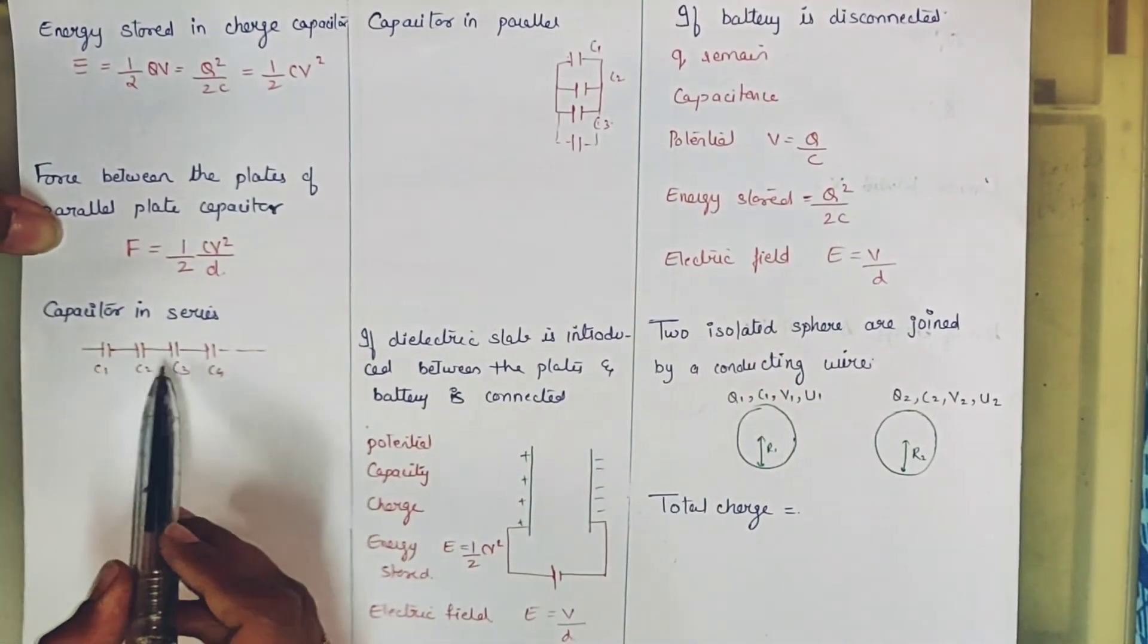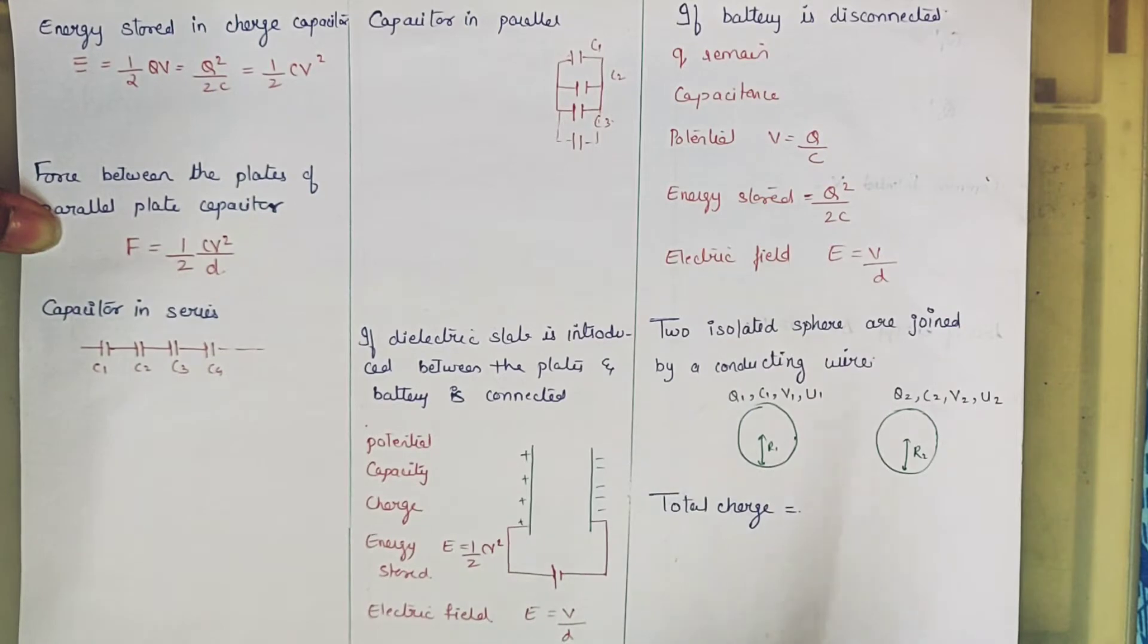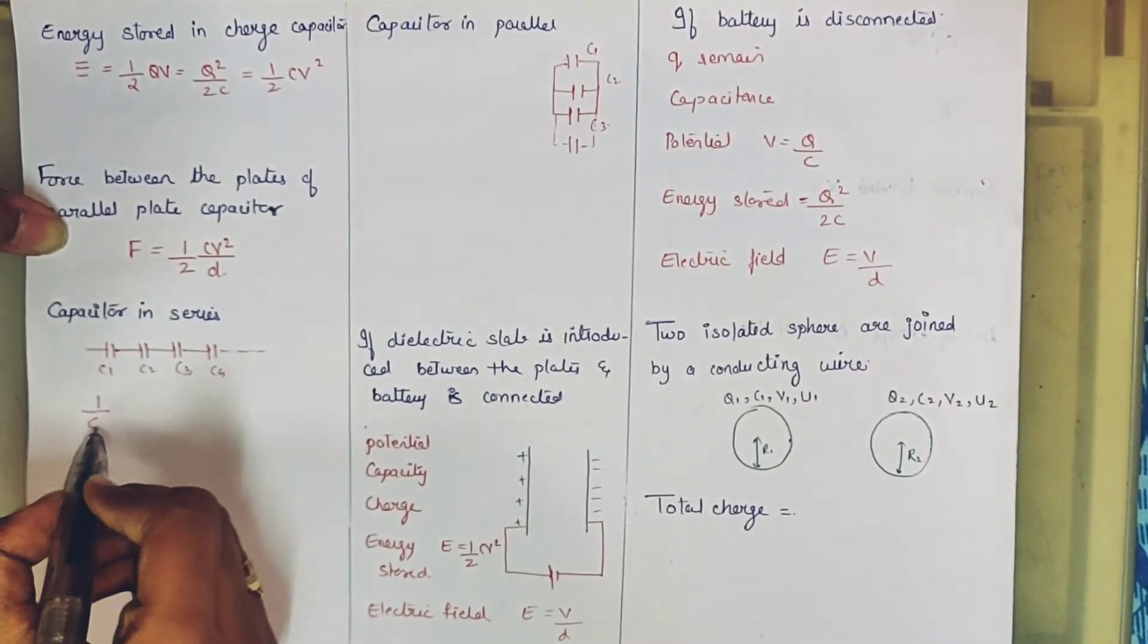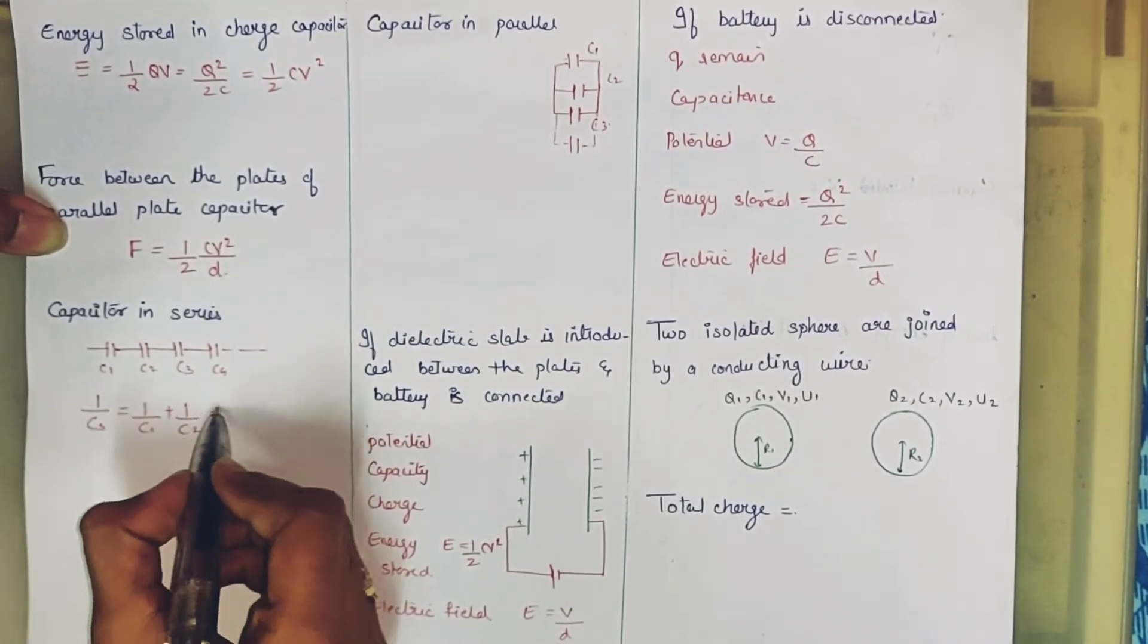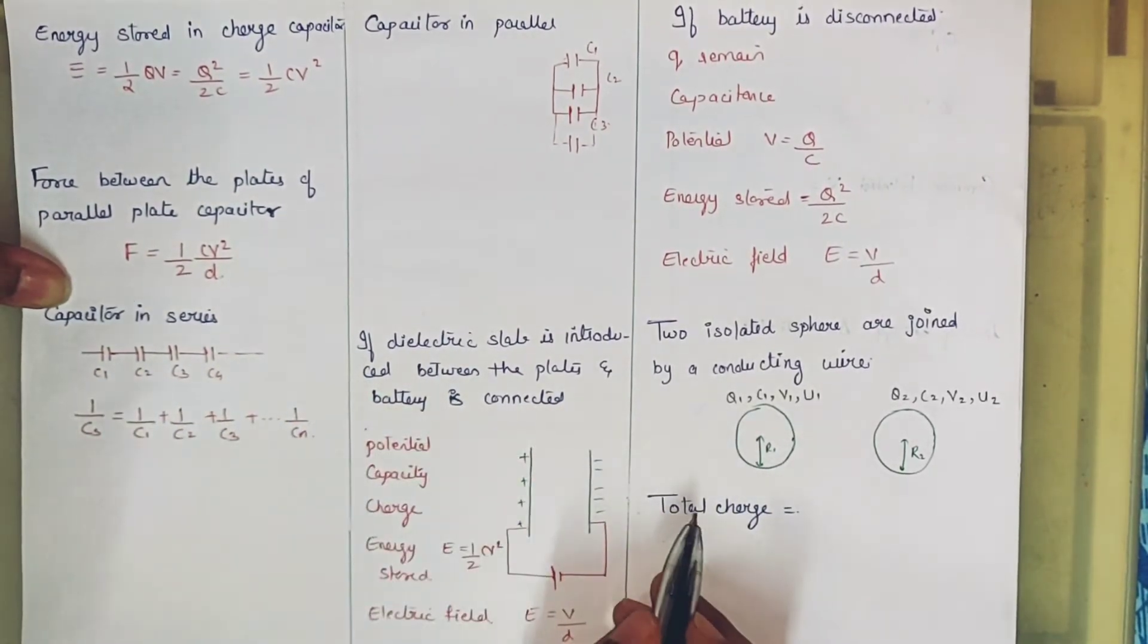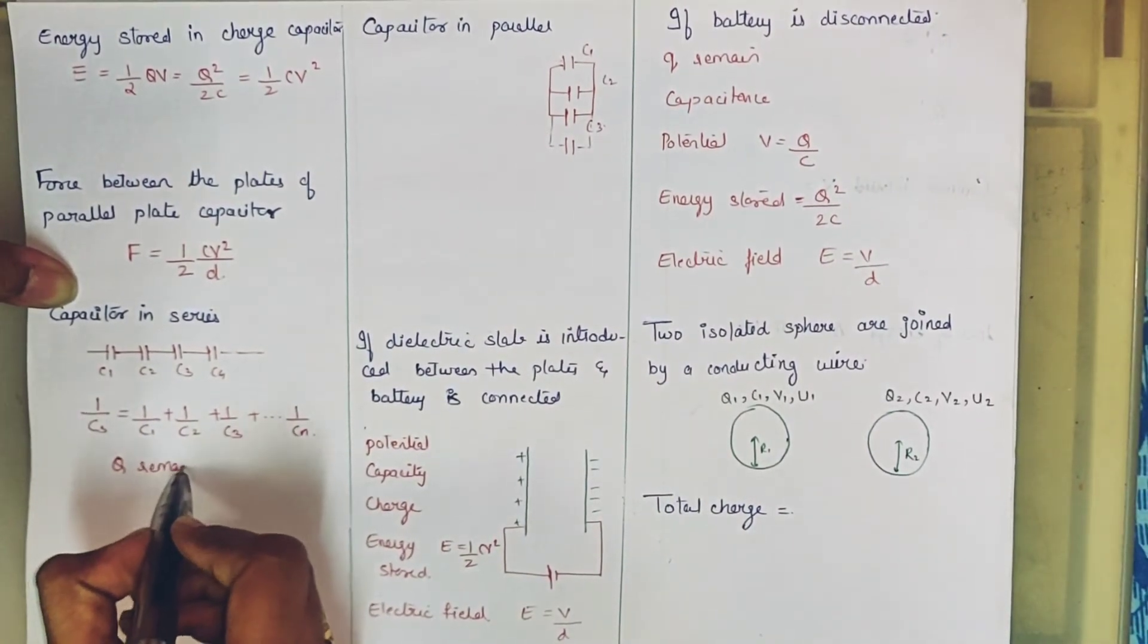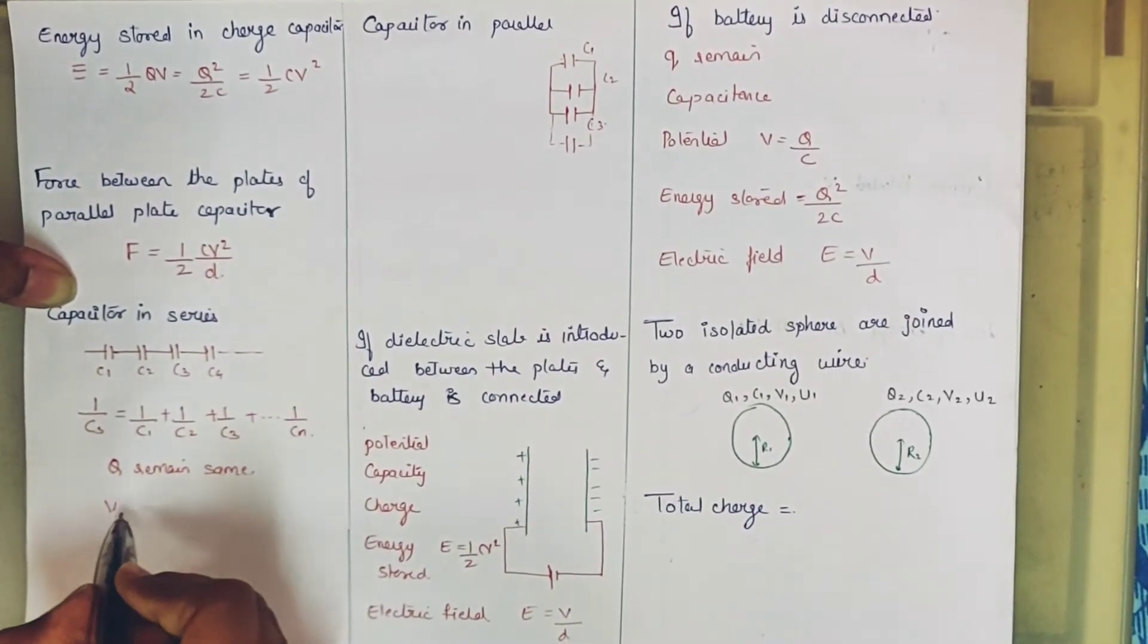Now you can see here that we have a capacitor in series. This is exactly like we put a resistor in series, but the formula is opposite. Here the parallel resistance formula is applied. That means the total 1 by CS will be 1 by C1 plus 1 by C2 plus 1 by C3 plus dot dot dot 1 by Cn. Here the current was the same, meaning the charge of each capacitor is the same.